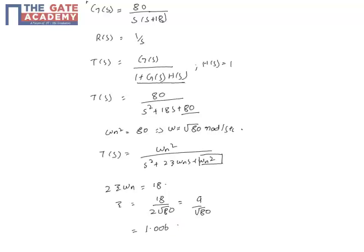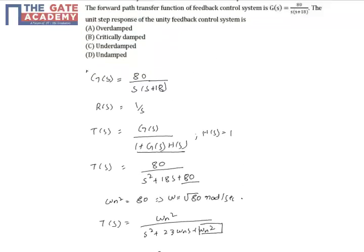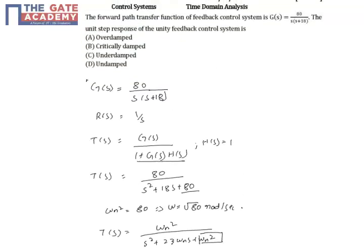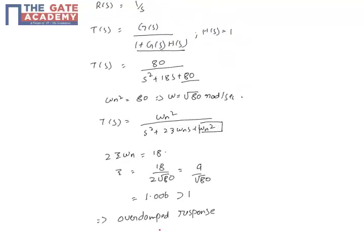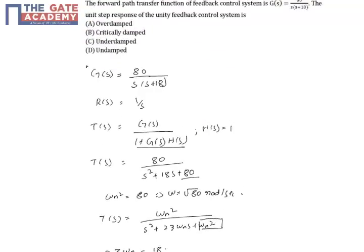So since this value is greater than 1, the system will exhibit an overdamped case. So it is overdamped response. So the correct option is A.